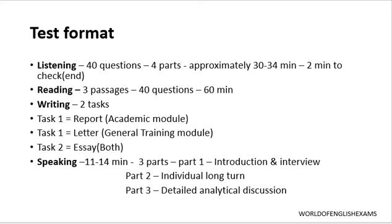The second task is where you write an essay, which is common for both the academic module and the general training module. The question given will differ, but the types of essays, the structure, and everything else remain the same. In task one you need at least 150 words, while in task two your essay should have a minimum of 250 words. There is no upper word limit. The time given for the writing test is one hour — 60 minutes — just like the reading test.